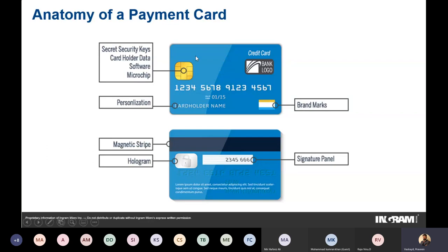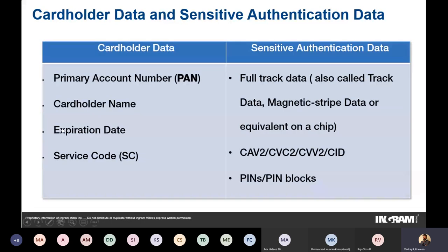The remaining components are more critical. The data embedded within the chip, the magnetic stripe at the back of the card, and the three-digit CVV constitute what we call sensitive authentication data. Cardholder data consists of the primary account number (the 16-digit number), the cardholder name, the expiry date, and the service code. Track data is what is embedded in the magnetic stripe — mag stripe cards have track one and track two data, containing parameters including the PIN and expiry date.